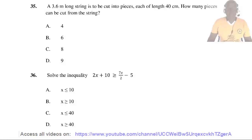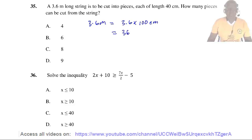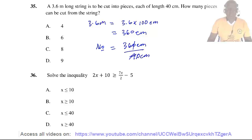Question 35. A 3.6 meter long string is cut into pieces each of length 40 centimeters. How many pieces can be cut? The length of the string is 3.6 meters, which equals 3.6 times 100 = 360 centimeters. The number of pieces equals 360 divided by 40, which equals 9 pieces. The right answer is D.